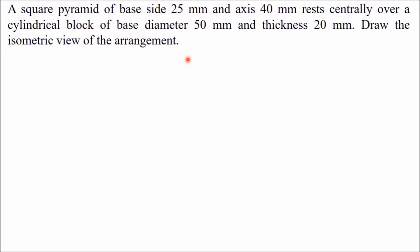In this video we will draw the isometric view of a combination of solids. The combination consists of a square pyramid of base side 25 mm and axis 40 mm, which is resting centrally over a cylindrical block of base diameter 50 mm and thickness 20 mm. We have to draw the isometric view of this combined solid.